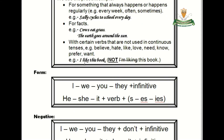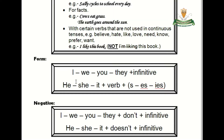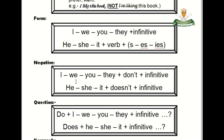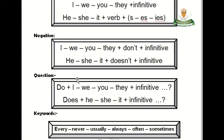For example: I like this book — not I am liking this book — because 'like' is a state verb, so we can't add -ing to it. The form: I, we, you, they come with the infinitive, and he, she, it comes with the verb plus -s, -es, or -ies.